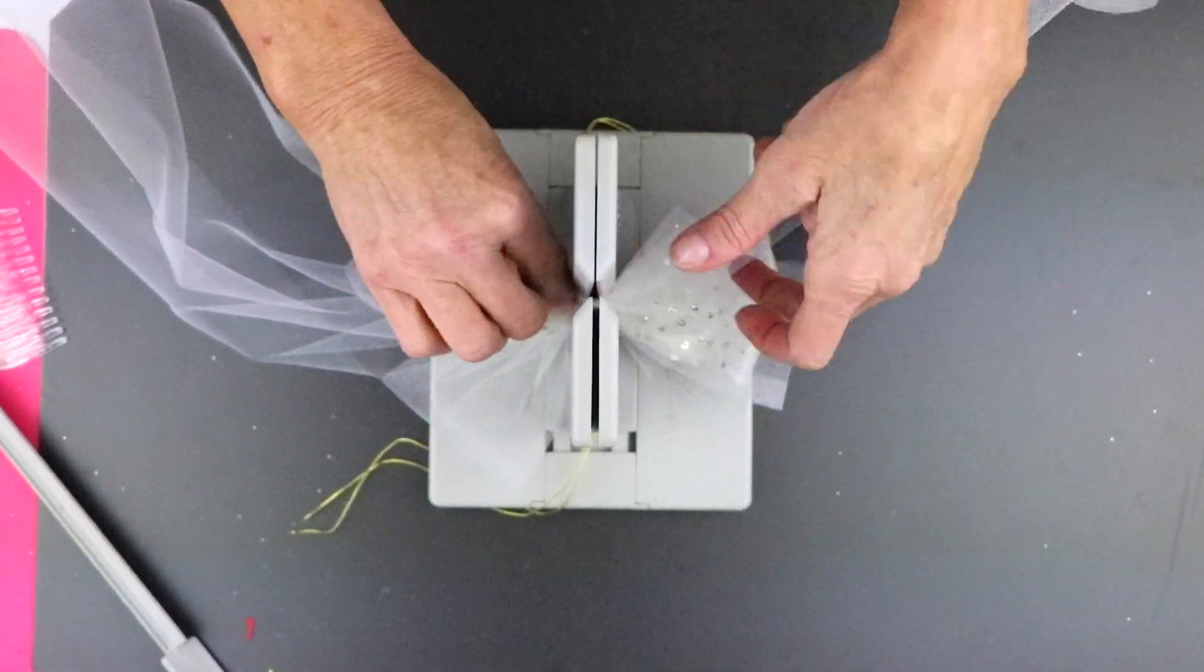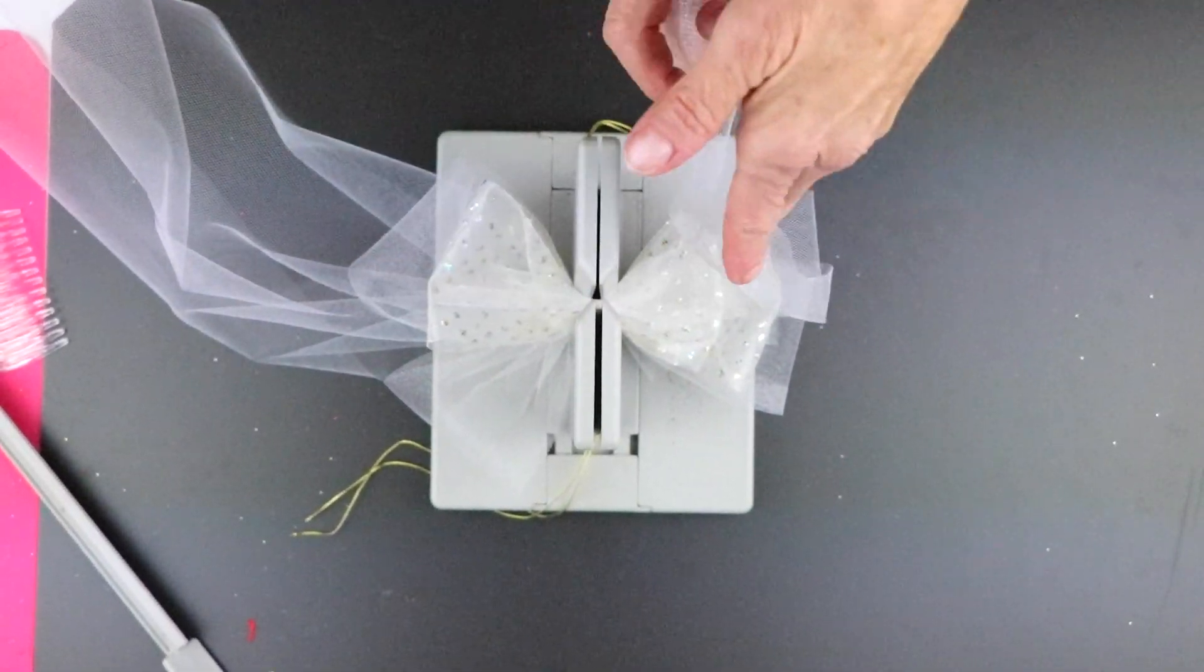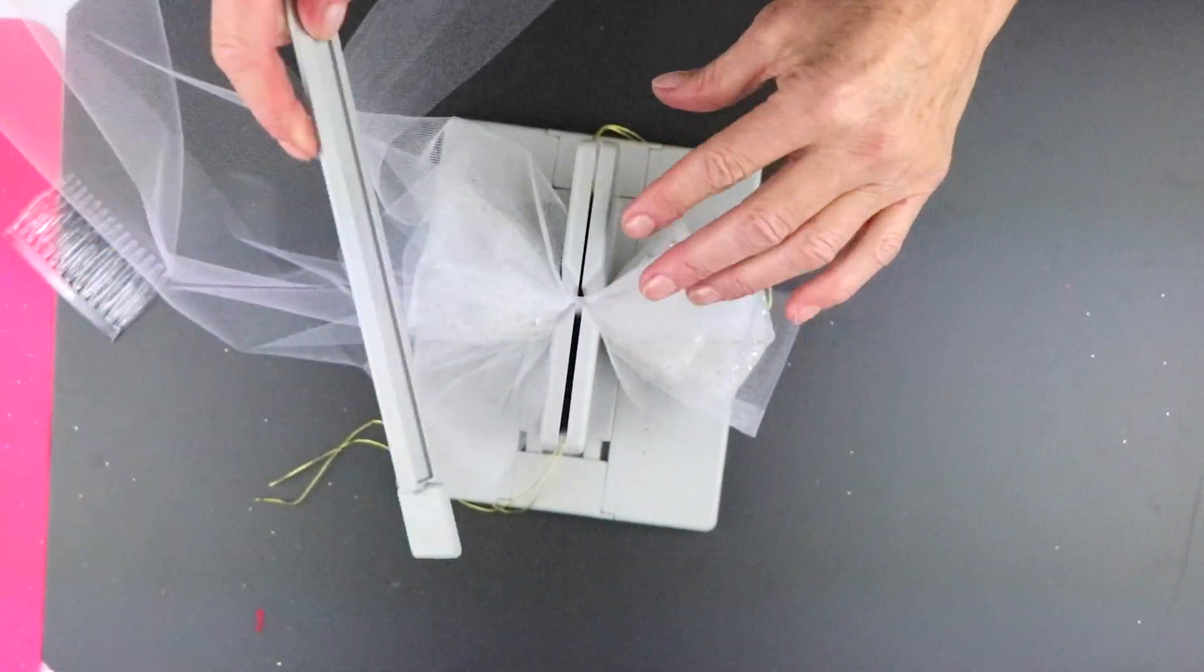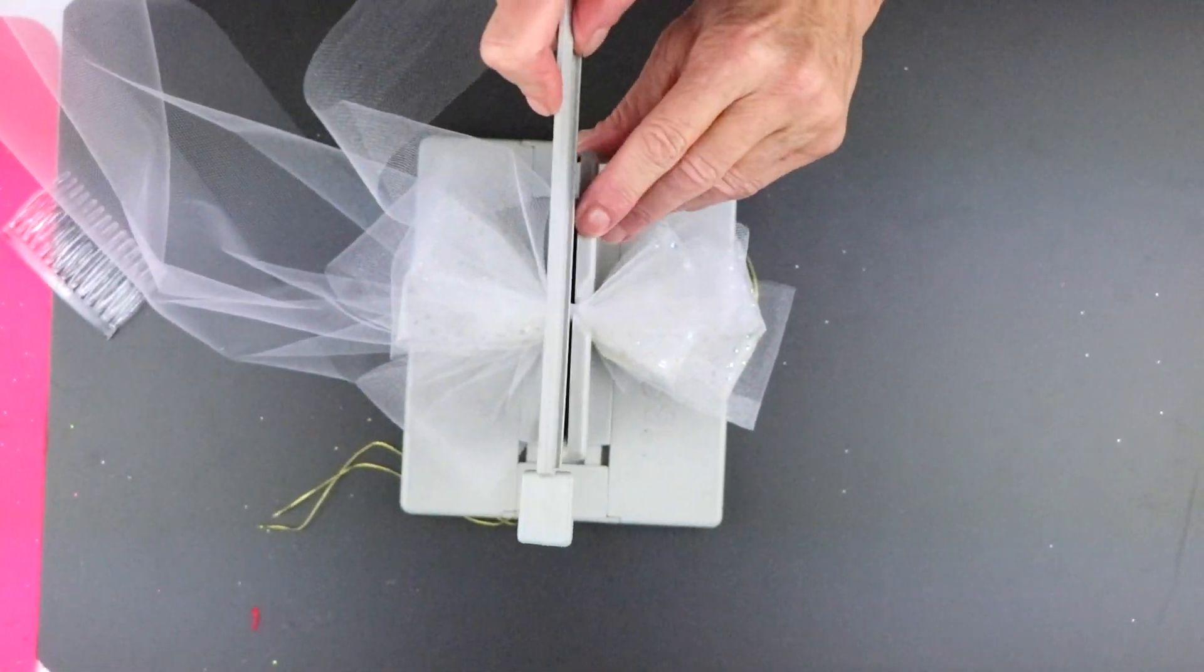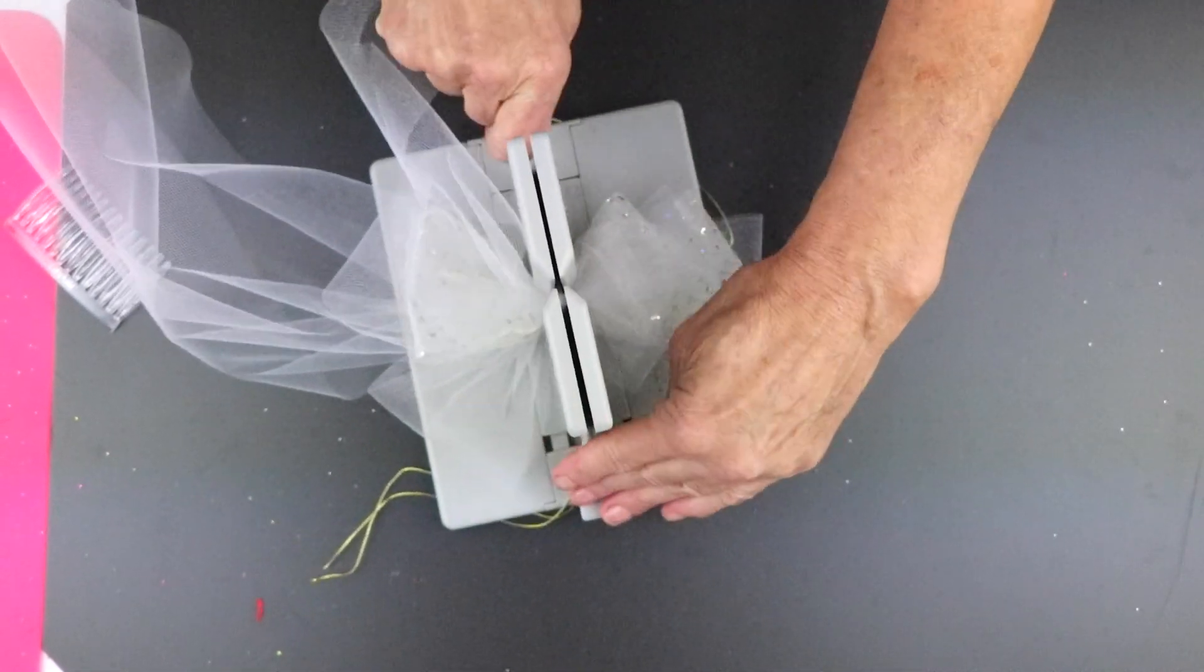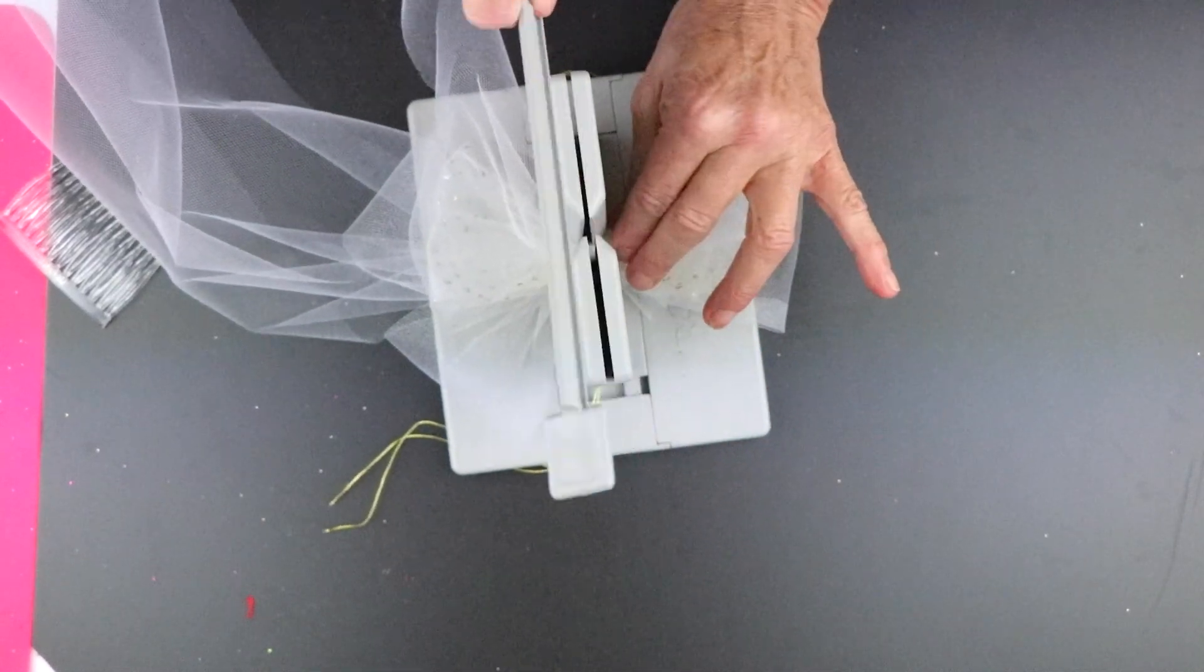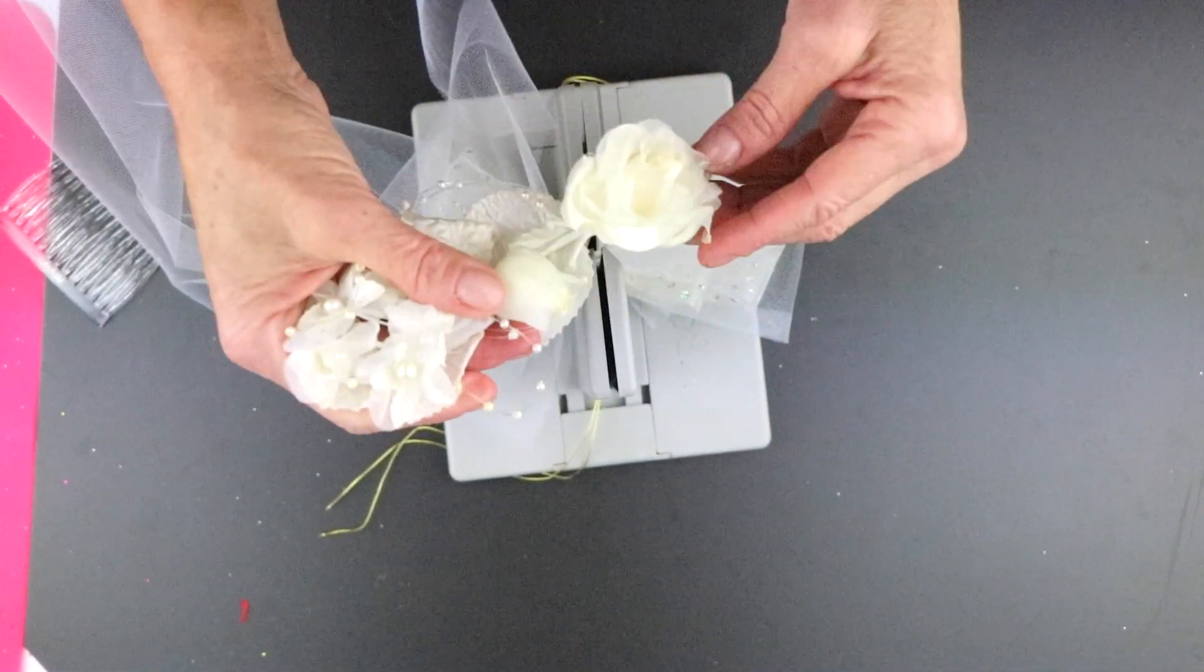So now all I'm going to do is make three more loops. And I'm going to take my Bowdabra wand and just scrunch everything. My Bowdabra's kind of sliding, because this is a really slippery surface here.